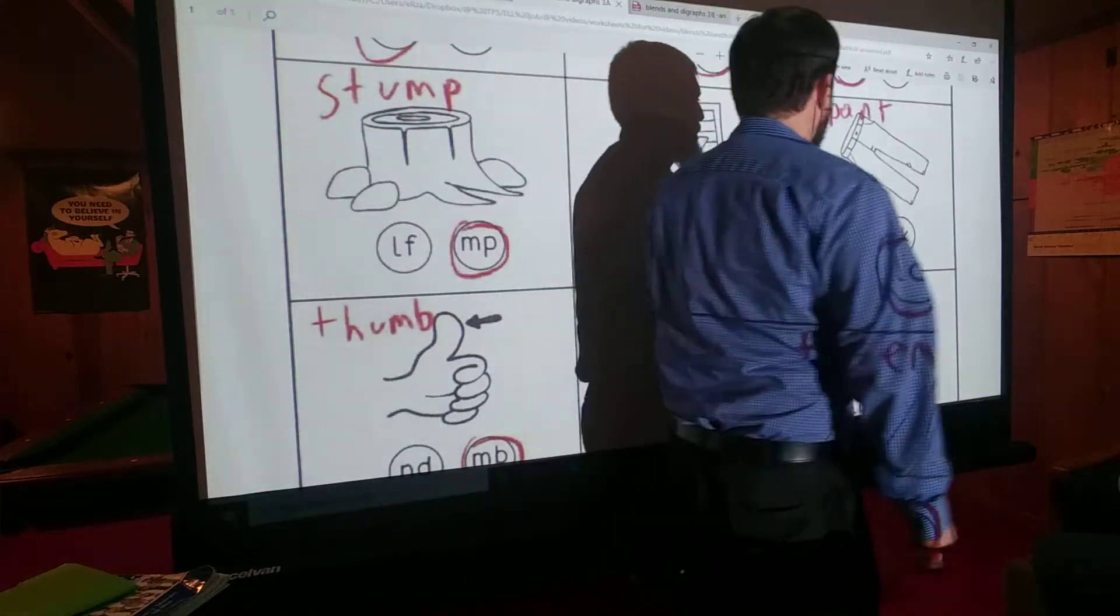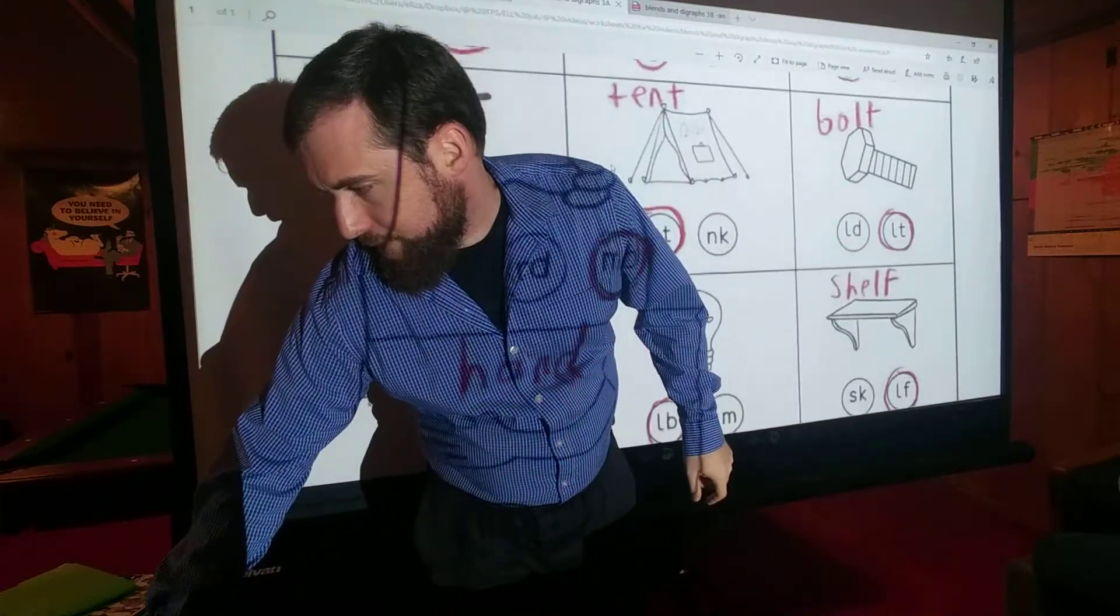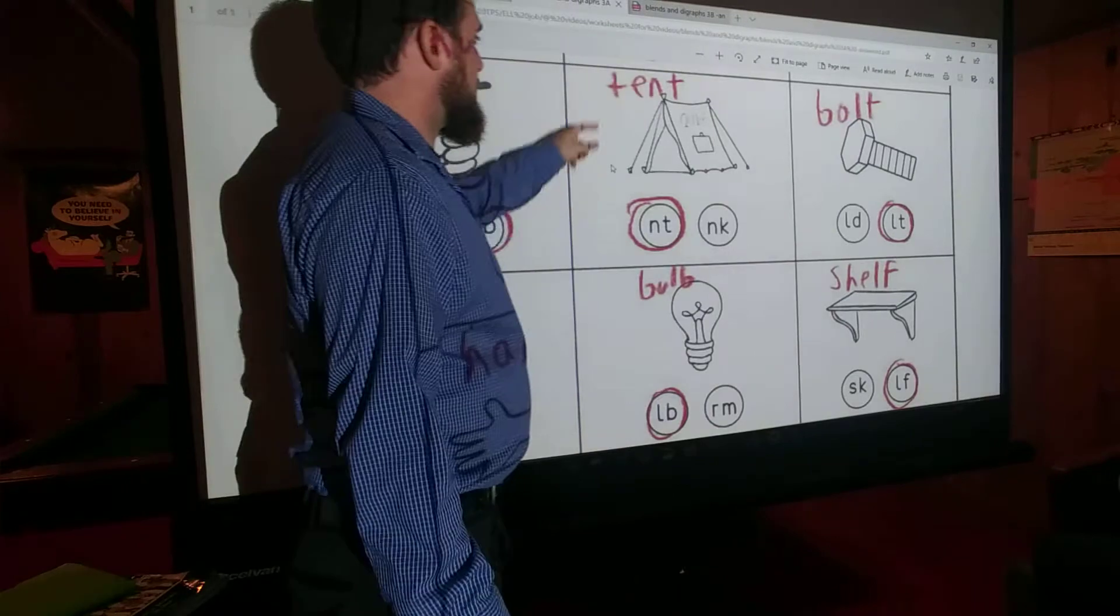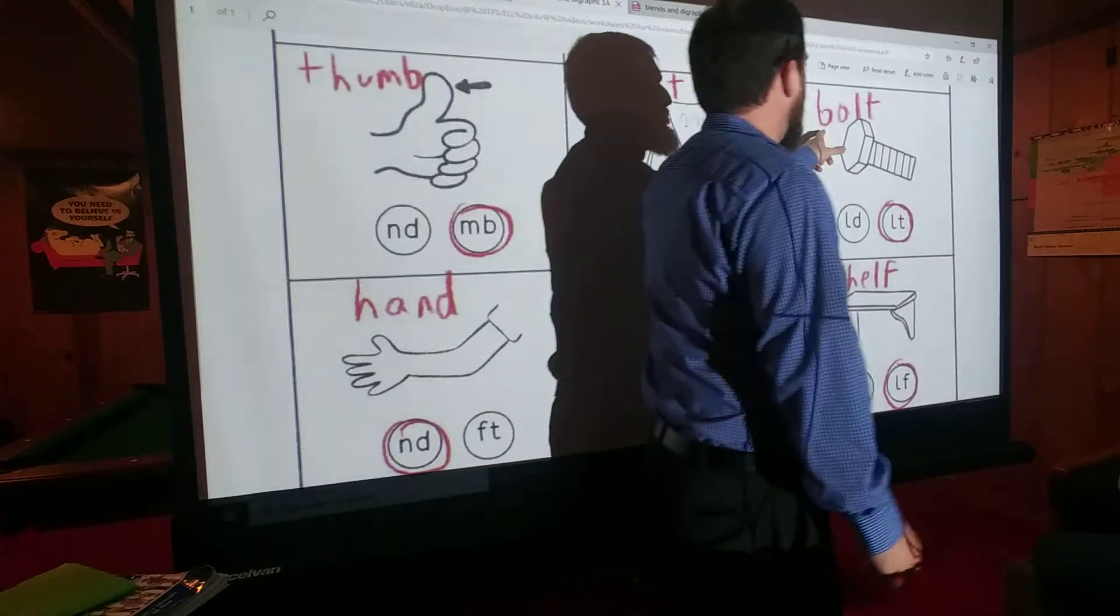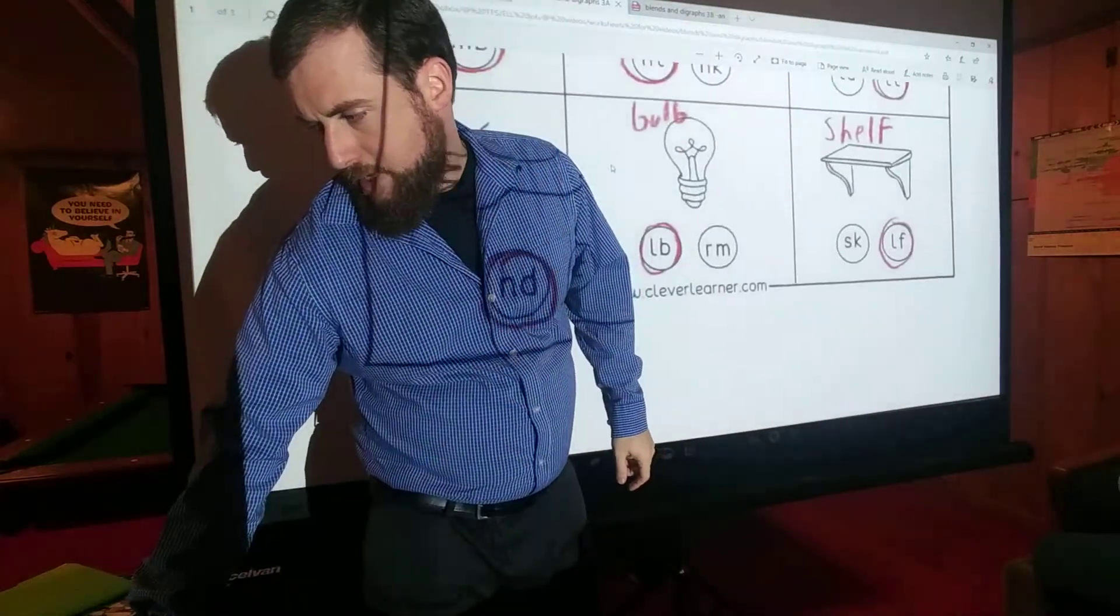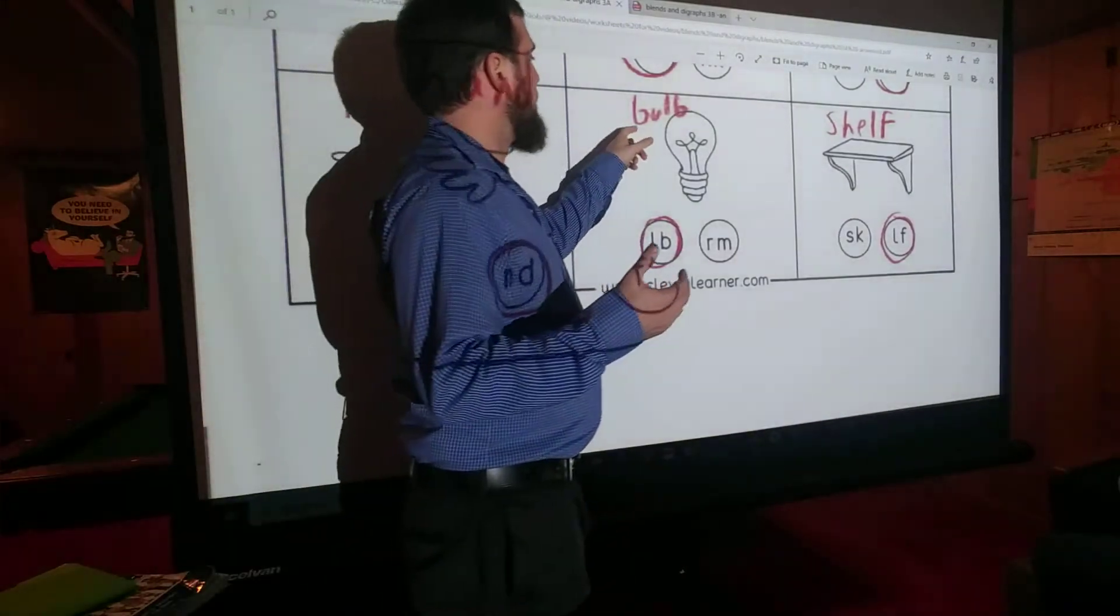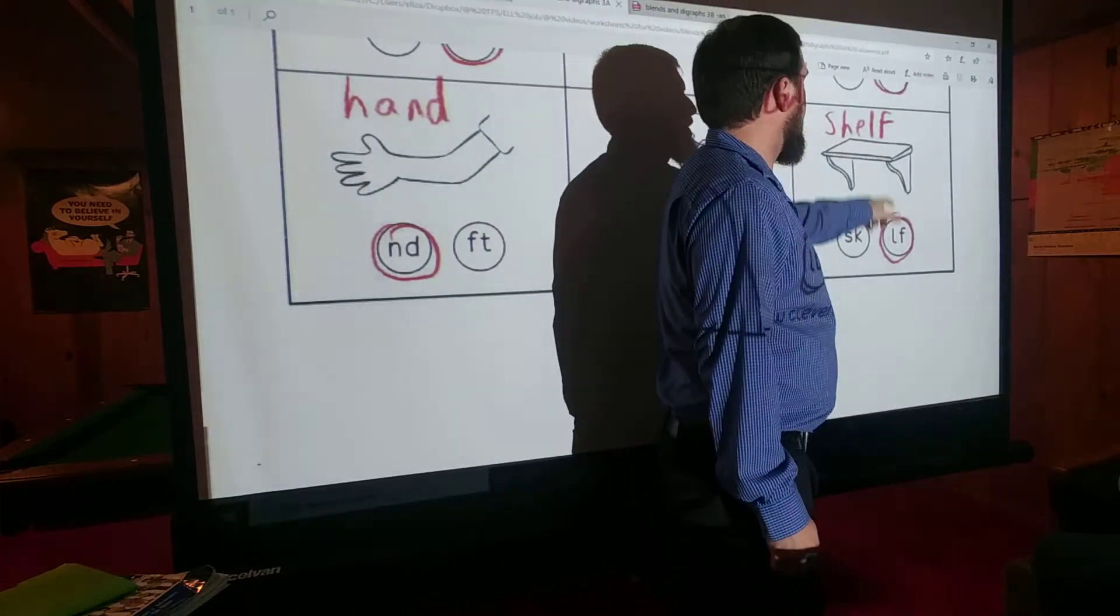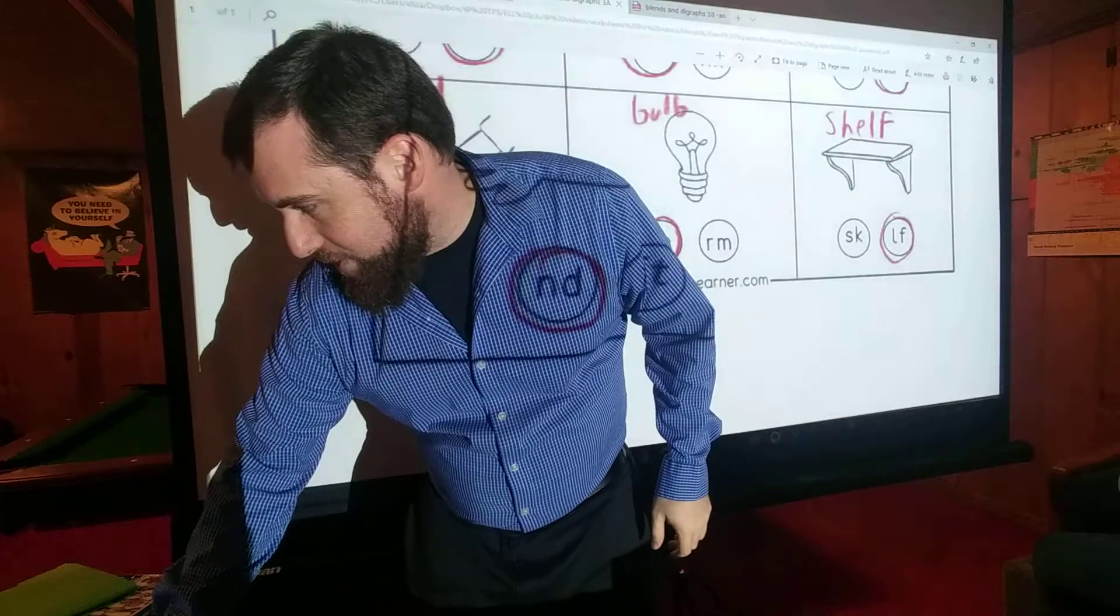Shield - LD. Shield. Pant - NT. Pant. Thumb - MB. Thumb. Tent - NT. Tent. Bolt - LT. Bolt. Hand - ND. Hand. Bulb - LB. Bulb. Shelf - LF. Shelf. Get it? Get what we're doing so far? All right. Let's go on to the next one.